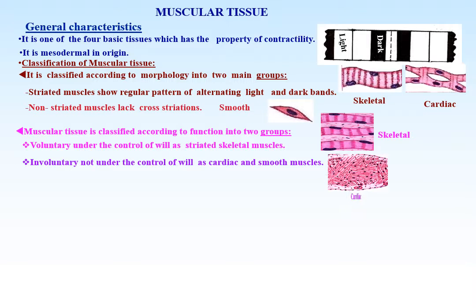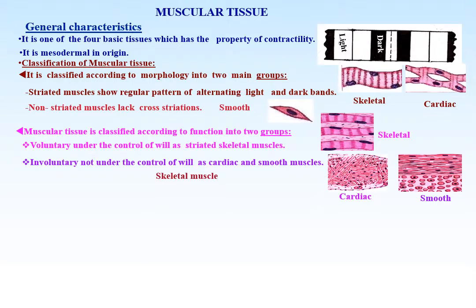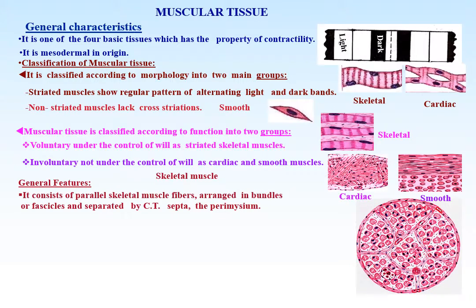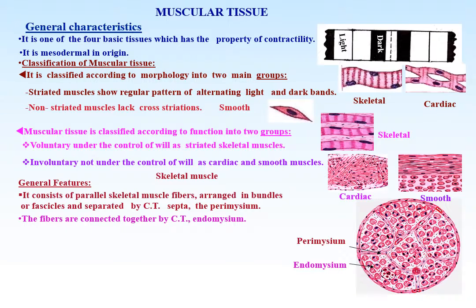As in cardiac and smooth muscles. Skeletal muscle general features: skeletal muscle consists of parallel skeletal muscle fibers arranged in bundles or fascicles, and separated by connective tissue septa called the perimysium. The fibers are connected together by connective tissue endomysium, while the whole muscle is covered by connective tissue epimysium.